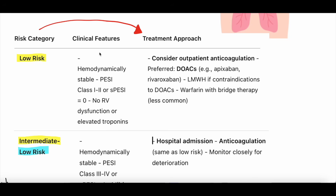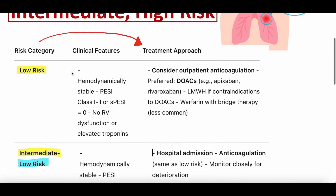What we wanted to talk about is how to categorize patients with pulmonary embolism, the clinical features that categorize them, and how that affects the treatment approach. Low risk pulmonary embolism is someone who is hemodynamically stable, and their PESI class — the pulmonary embolism severity index — is one or two, suggesting a low risk of 30-day mortality, in the single-digit percentage range.